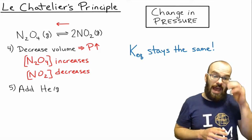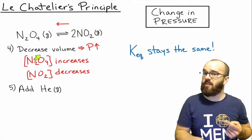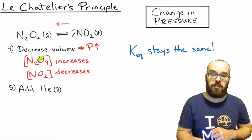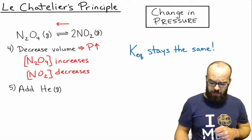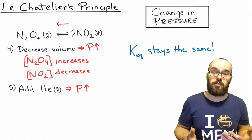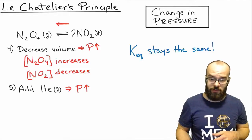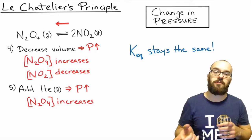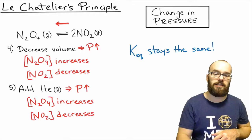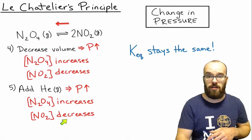Let's look at another example. What if we add helium? Helium is not involved in the reaction, but what it does do is increase the total pressure of this reaction vessel. So this would be another example of increasing the pressure. Again, if we increase the pressure, that's going to shift the reaction toward the fewest number of moles. In this case, we'll be again shifting it to the left toward dinitrogen tetroxide, increasing its concentration and decreasing the nitrogen dioxide concentration.